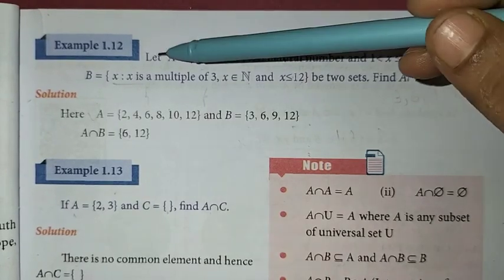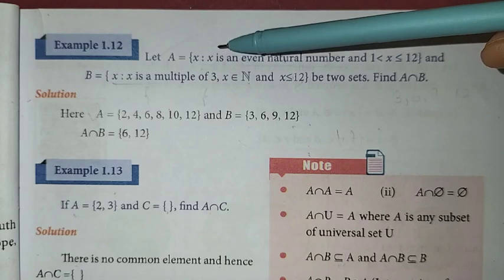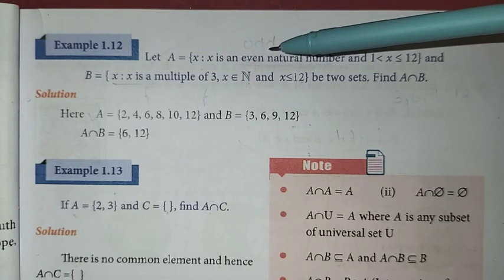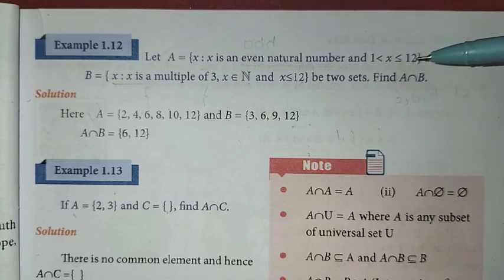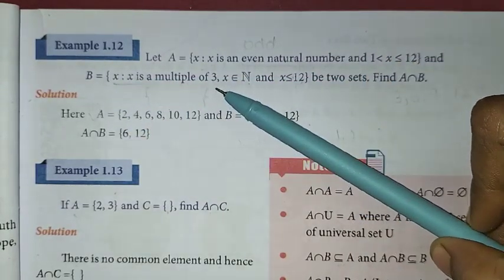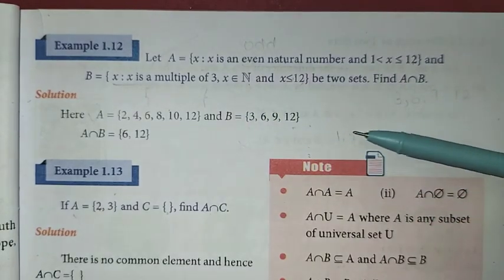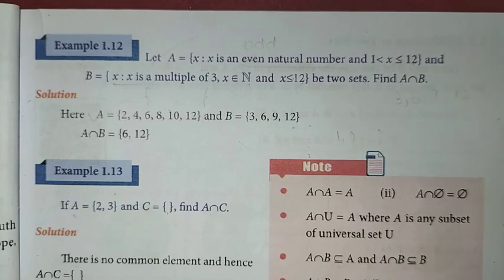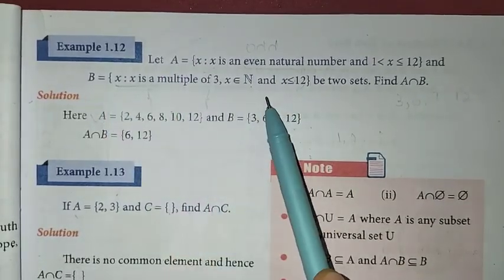In this problem, let A equal the set of all x such that x is an even natural number and 1 < x ≤ 12, and B equal the set of all x is a multiple of 3, x belongs to natural numbers and x ≤ 12. These are two sets. Find A intersection B.